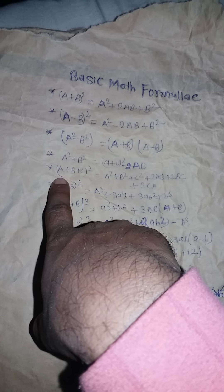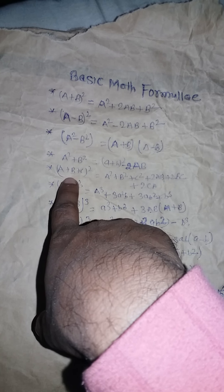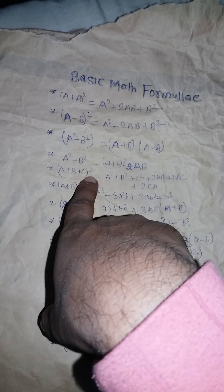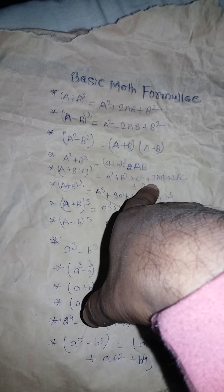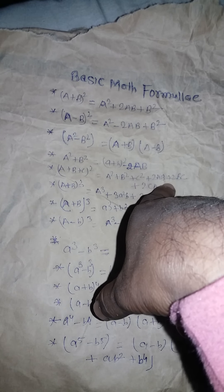Next one: a plus b plus c whole square is equal to a square plus b square plus c square plus 2ab plus 2bc.